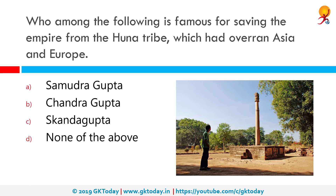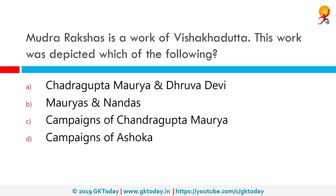Who among the following is famous for saving the empire from the Huna tribe, which had overrun Asia and Europe? The correct answer is Skandagupta. Skandagupta was a Gupta Emperor of Northern India, as evidenced by the Bhitari pillar inscription. He defeated the Kushamitras, a tribe that had rebelled in central India, and also crushed the Huna invasion in 455 AD, managing to keep them at bay.